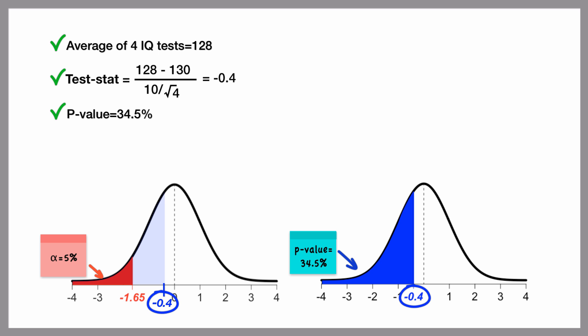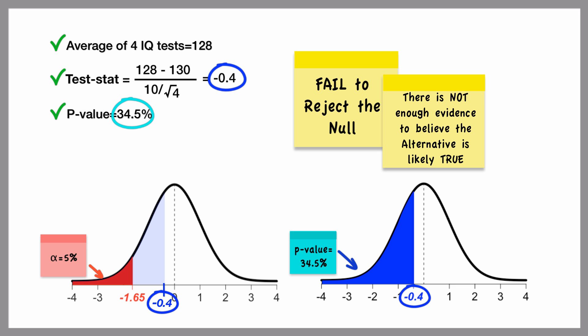In this scenario, based on the test statistic of negative 0.4 and the p-value of 34.5%, we would fail to reject the null hypothesis and conclude that we do not have sufficient evidence to believe that the alternative is likely true.